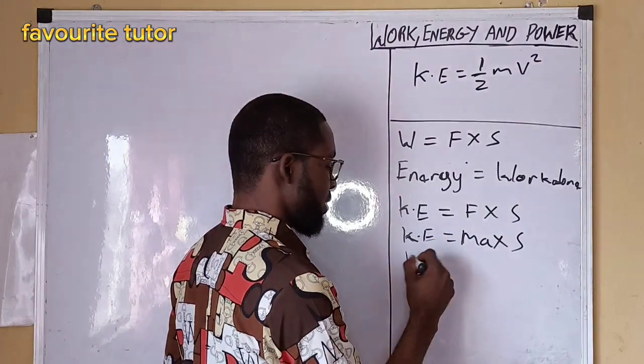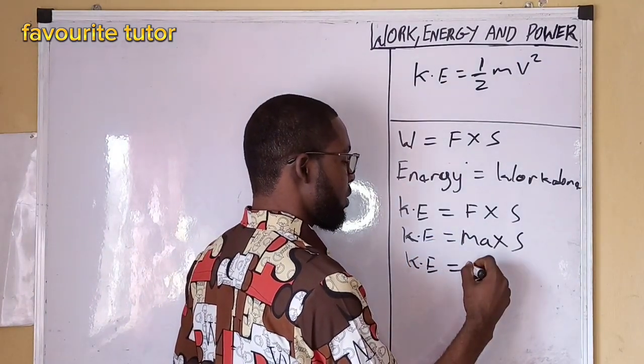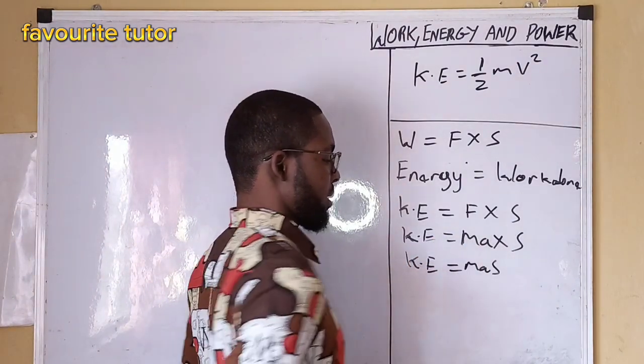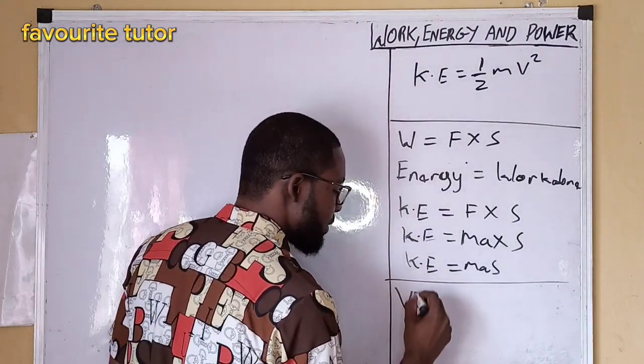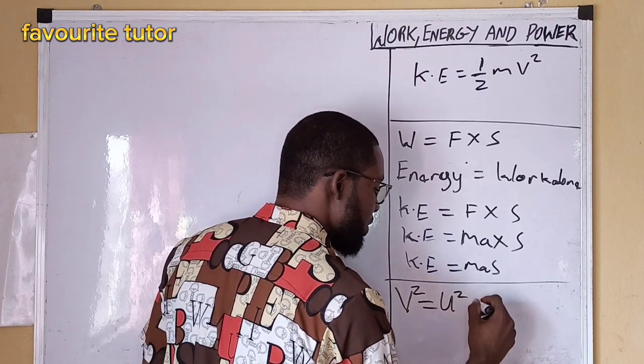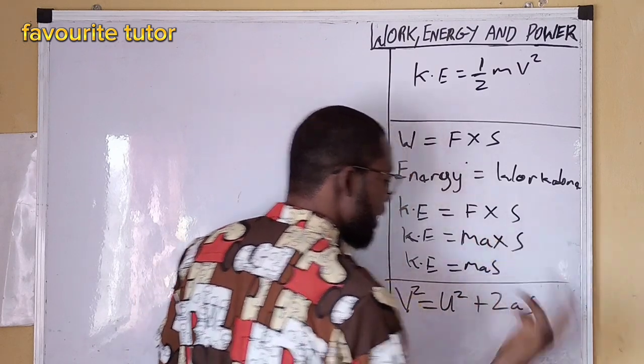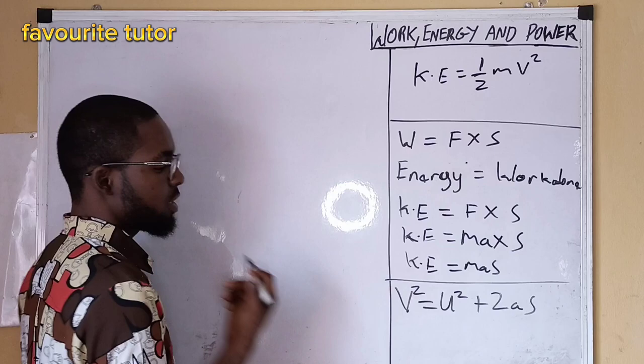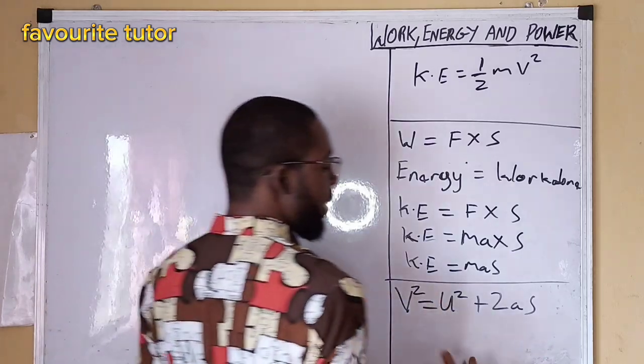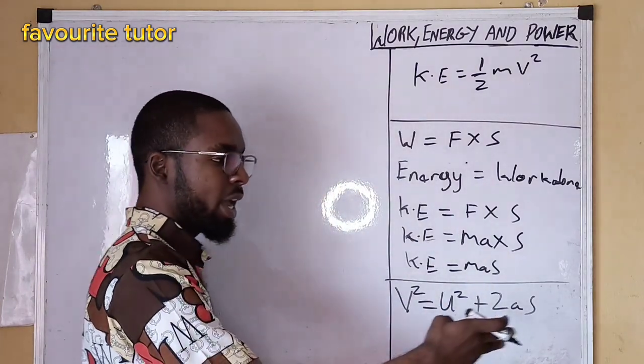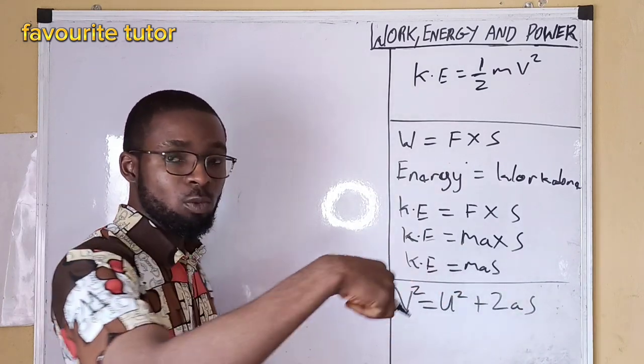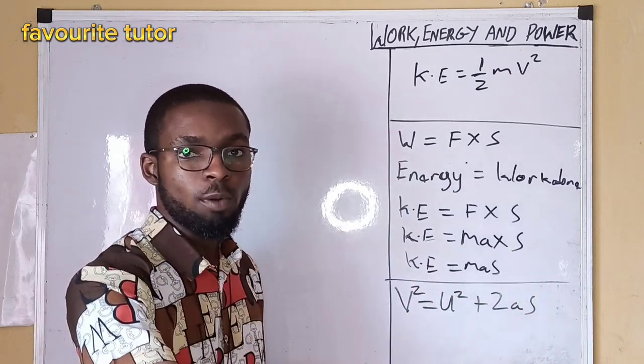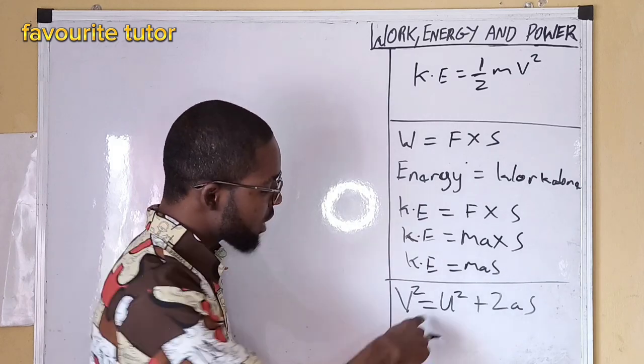Now if we go back to the equation of motion, kinetic energy equals m a s. If you go back to the equation of motion using this equation, v squared equals u squared plus 2 a s. Normally before a body start changing in position, the body must first be at rest or uniform motion.